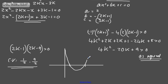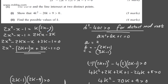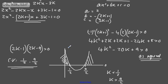We're interested in when the expression is greater than 0, i.e., above the x-axis. From the sketch, the parabola is above zero for k less than one half and for k greater than nine over two. So the possible values of k are k less than one half, or k greater than nine over two. That's 4 marks in total.